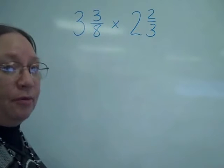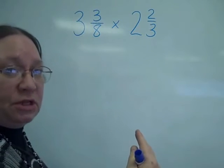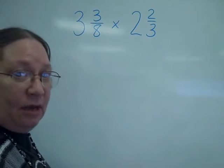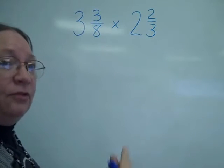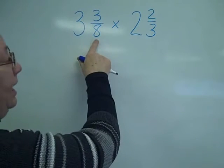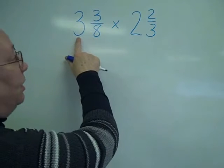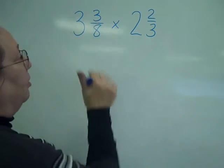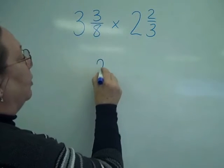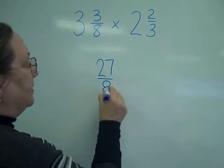Remember, an improper fraction is where the numerator or the top is bigger than the denominator or the bottom. So, we're going to take 8 times 3 is 24 plus the 3 to give you 27 over 8.